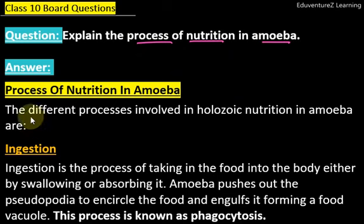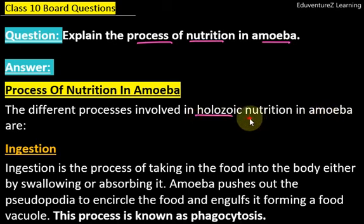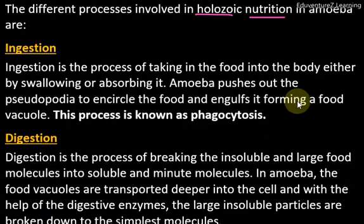The answer is: the different processes involved in holozoic nutrition in amoeba are as follows. Amoeba follows a holozoic nutrition process. The first one is ingestion.